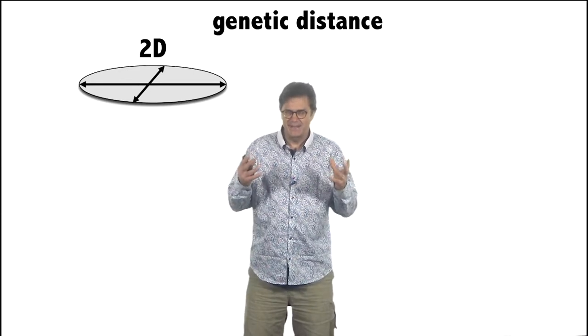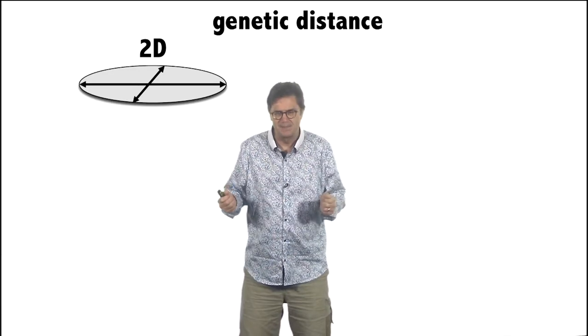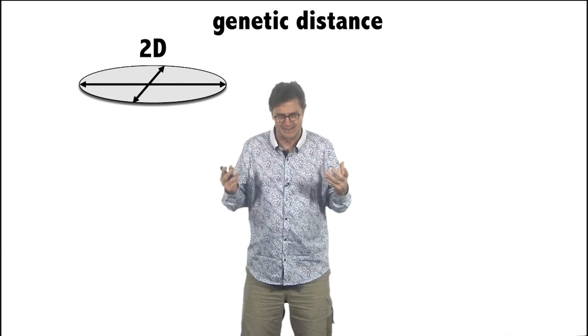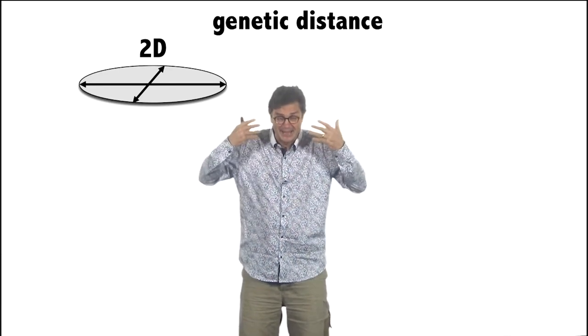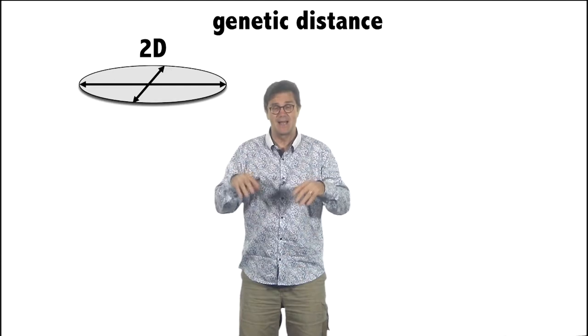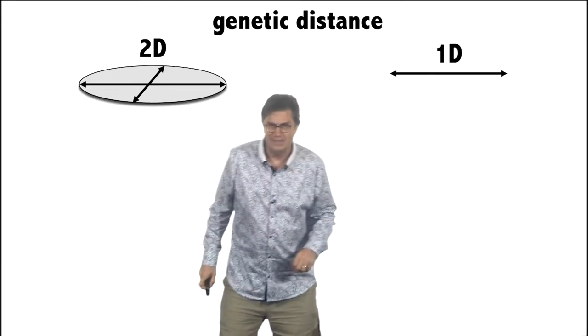Now, genetic distance, like between an elephant and a kangaroo or between a human being and a chimpanzee, is not a one-dimensional or two-dimensional, it's a multi-dimensional distance. But in order to represent it as a phylogenetic tree, we have to project that n-dimensional distance onto two-dimensional space or one-dimensional space.